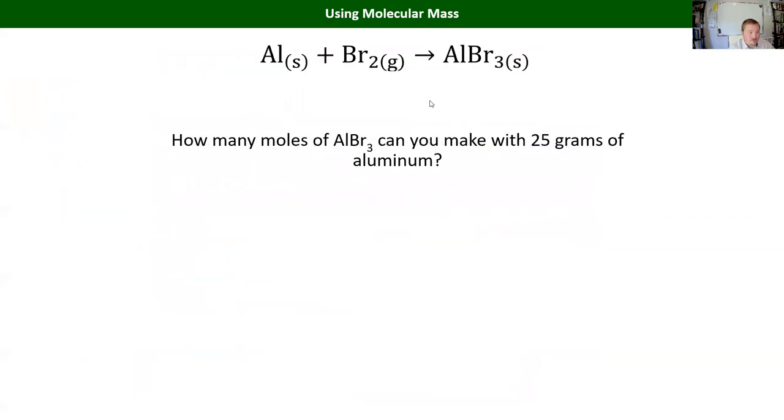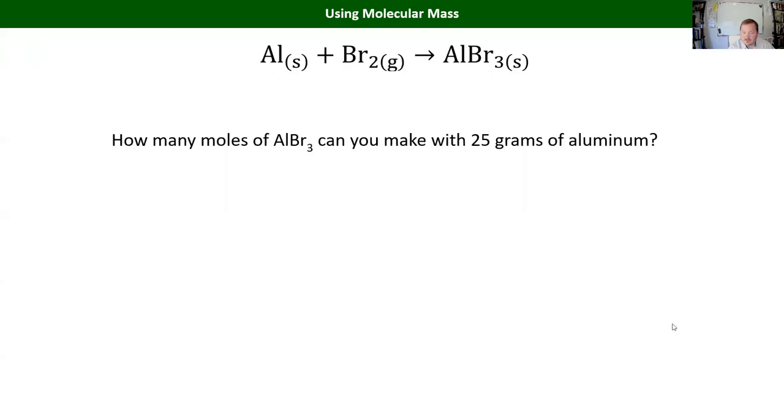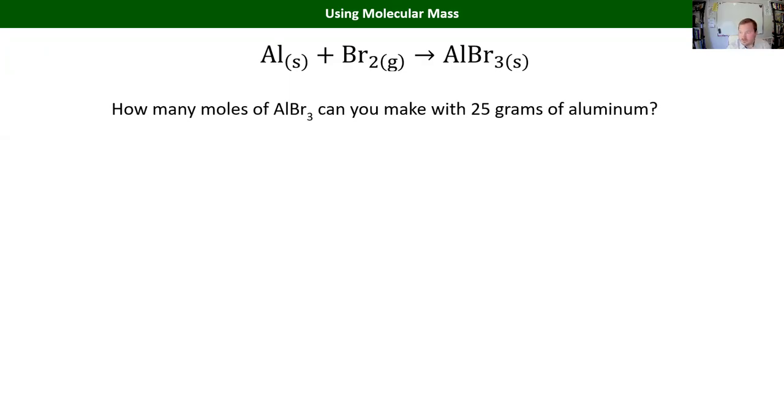So I thought I'd start by us doing some practice stoichiometry problems to make it go all the way through one of these percent yield problems so we can see it front to back how it works. So let's start by doing this reaction as a warm up. Start by balancing it and then figure out how many moles of aluminum bromide you can make from 25 grams of aluminum.